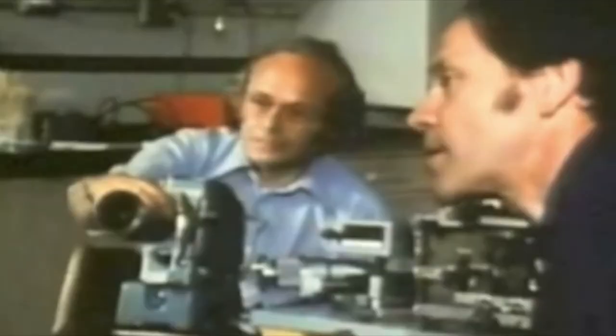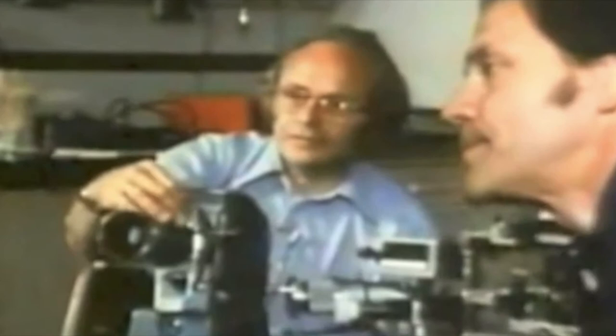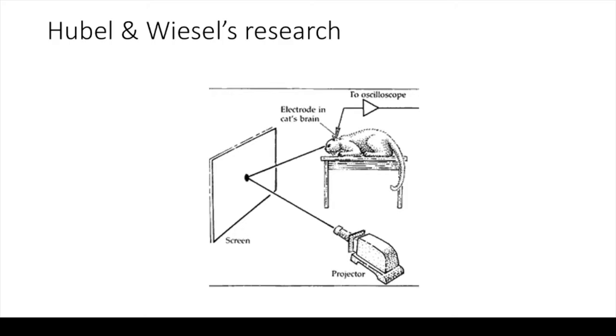In their own words, rather by accident one day, we were shining small spots, either white spots or black spots onto the screen. And we found that the black dot seemed to be working in a way that at first we couldn't understand, until we found that it was the process of slipping the piece of glass into the projector, which swept a line, a very faint, precise, narrow line across the retina. And every time we did that, we'd get a response.